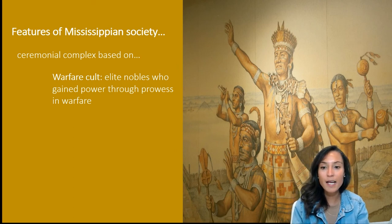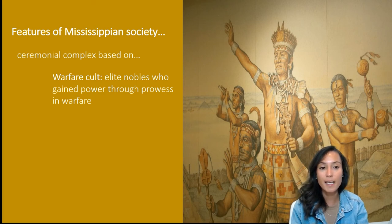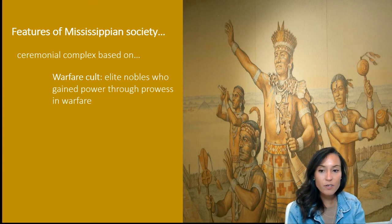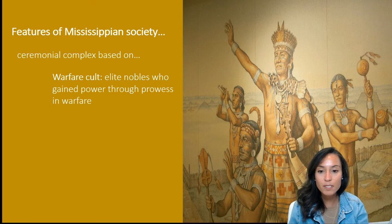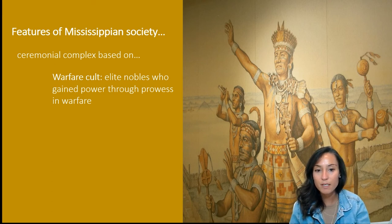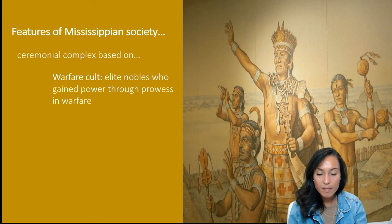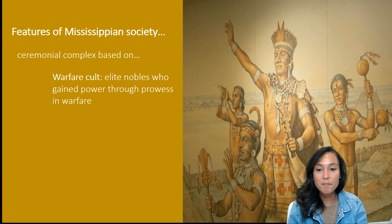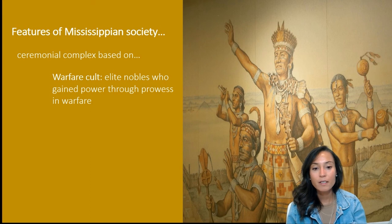Cahokian society was fueled by a complex ceremonial system based on warfare, fertility, and ancestor worship. The warfare cult was made up of elite nobles from particular kin groups, associated with the depiction of exotic motifs and symbols on costly raw materials like seashells or imported copper. Evidence for this war-based cult appears in the form of exotic cosmic imagery depicting animals, humans, and mythic beasts which bound together warfare, cosmology, and nobility.